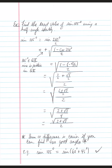The sum or difference formula is actually easier if you can find two good angles. For example, sine(105°) could be done using the sum formula: sine(60° + 45°), since both 60° and 45° are on the unit circle and add to 105°.